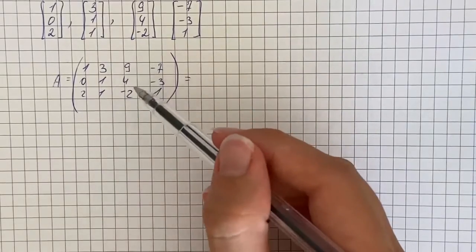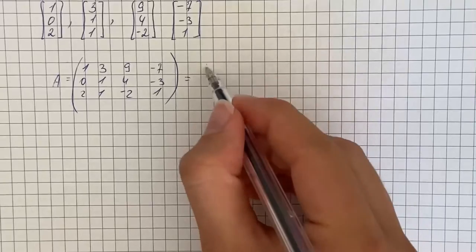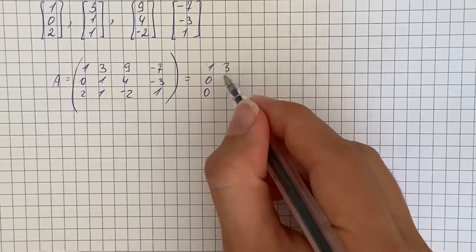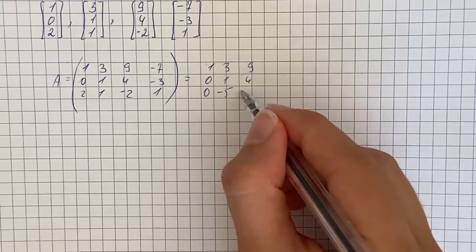So at first we're going to subtract twice the first row from the third and get 1, 0, 0, 3, 1, negative 5, 9, 4, negative 20.